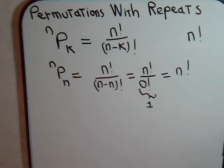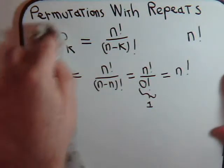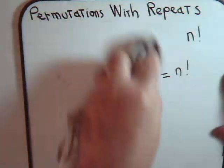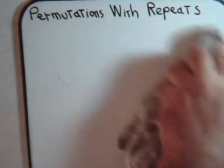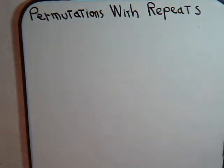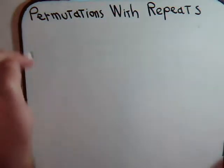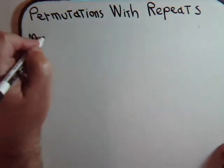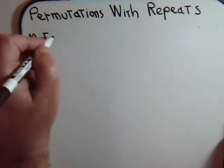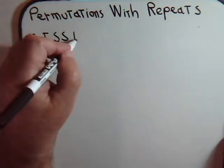Now what I want to do in this video is consider situations where we have n number of objects but not all of them are distinct. In that situation, how many different permutations can you arrange? In a lot of textbooks the classic example used to illustrate this is the word Mississippi, where we have a lot of letters but many of them are repeated.